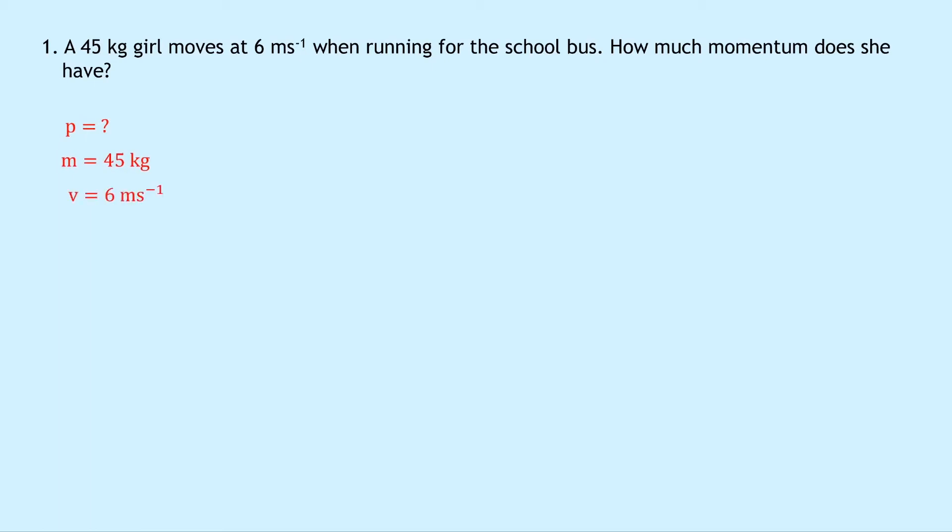So writing down our equation for momentum, we have p equals mv, and substituting in the numbers we get 45 times 6, and if you put that into your calculator you should get an answer of 270 kilogram meters per second.